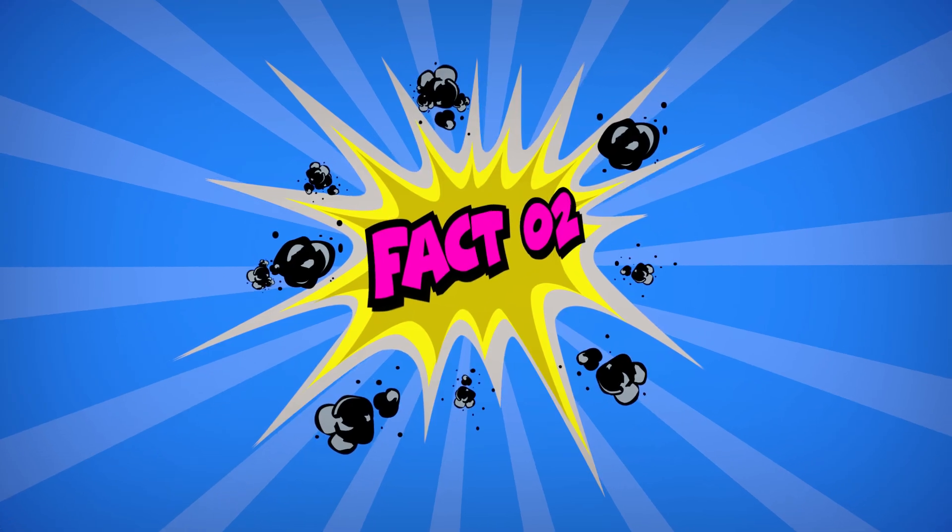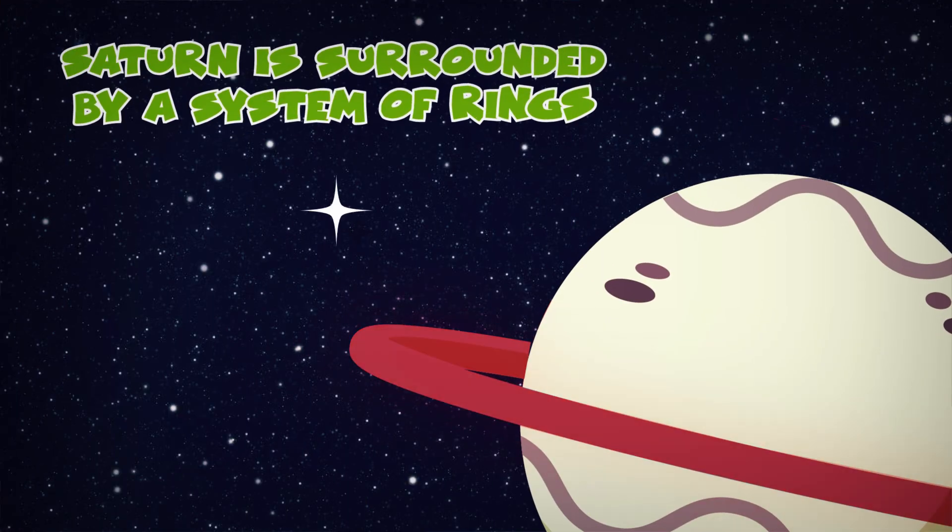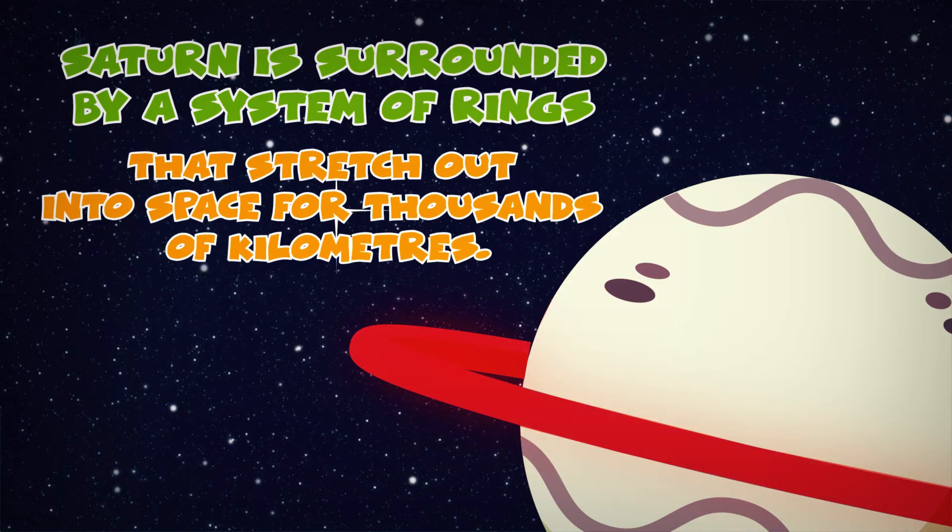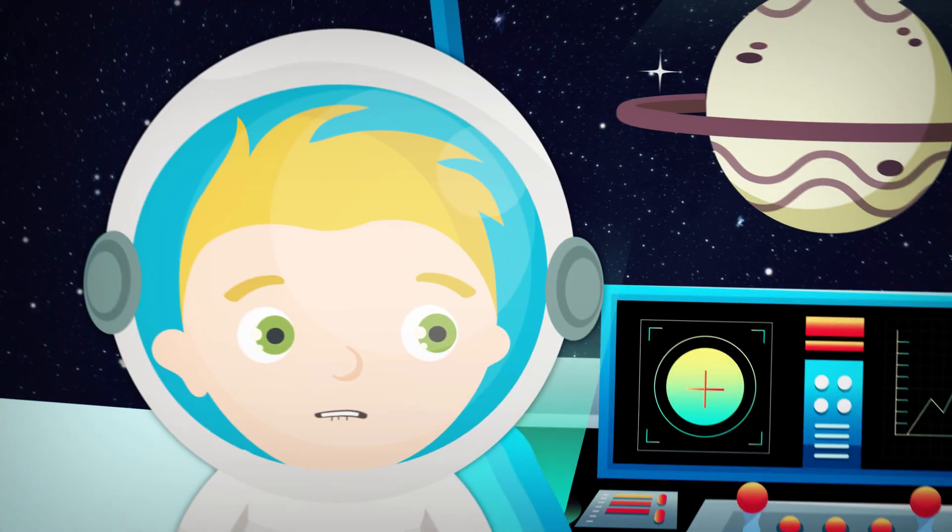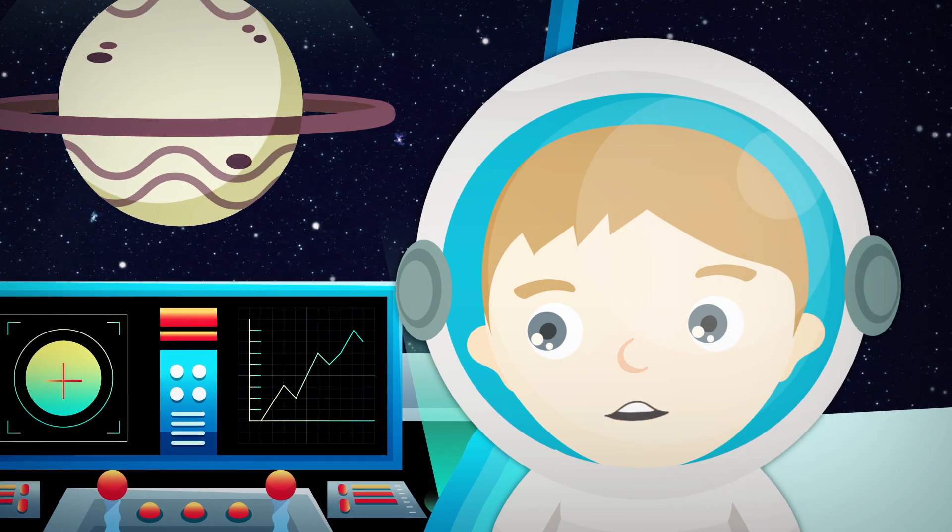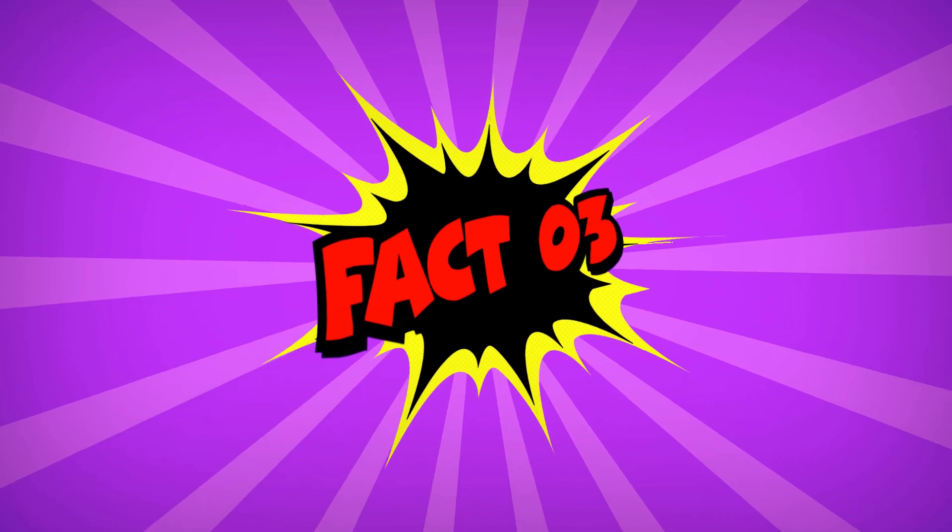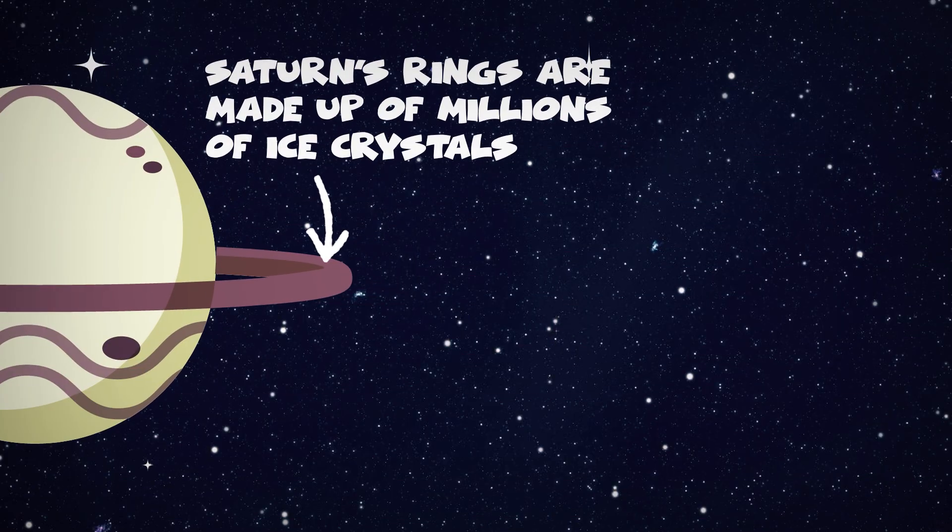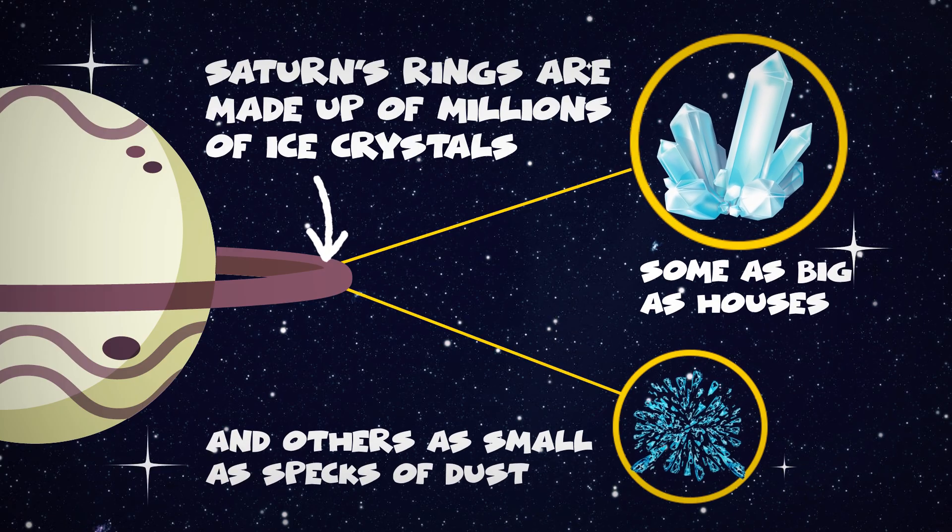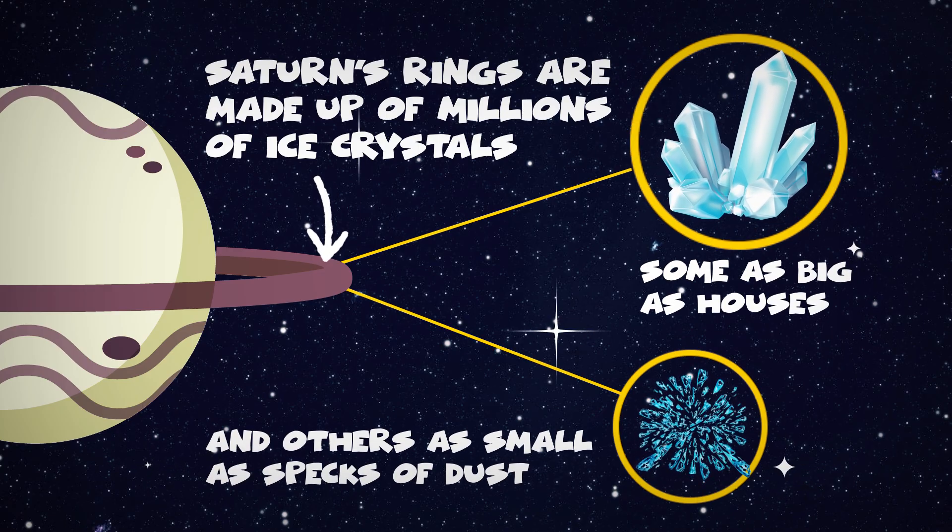Fact 2. Saturn is surrounded by a system of rings that stretch out into space for thousands of kilometres. What are the rings made of? Luckily, that is fact number 3. Saturn's rings are made of millions of ice crystals, some as big as houses and others as small as tiny specks of dust.